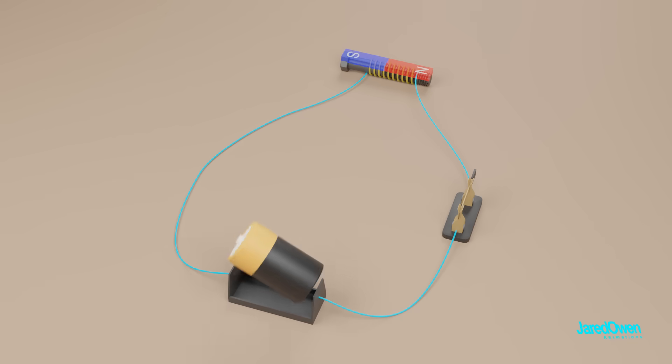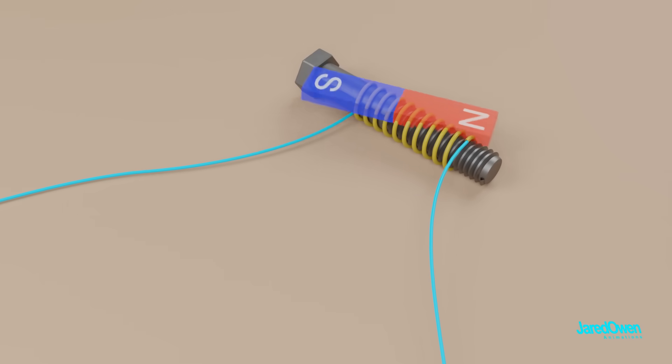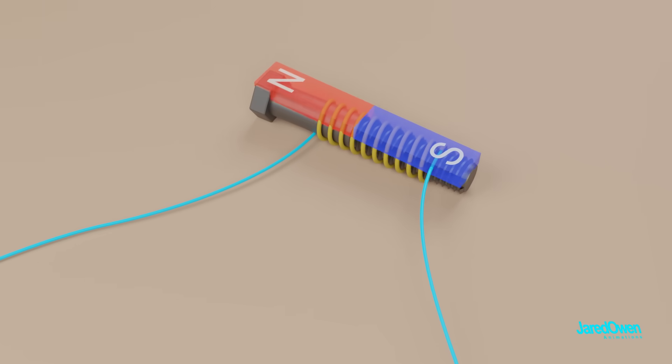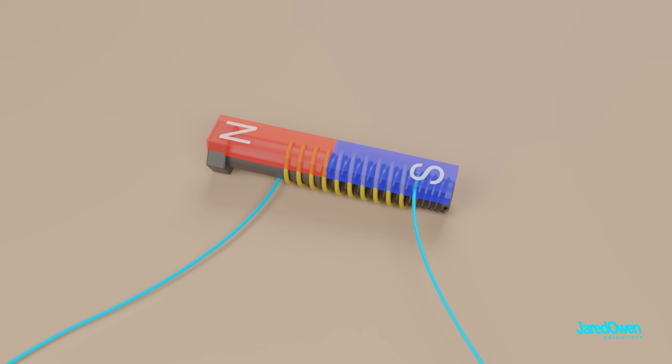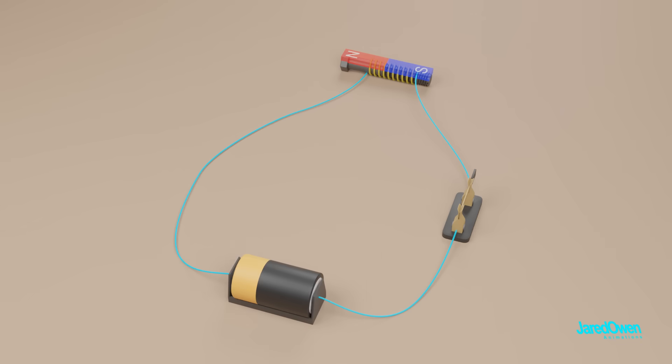Now watch what happens when we flip the battery. The electric current was flowing this way, but now it flows the other way. This will cause the poles on our magnet to switch places. North will become south, and south will become north. This is called reversing the polarity of an electromagnet.